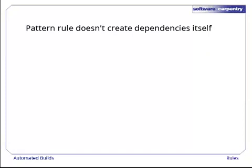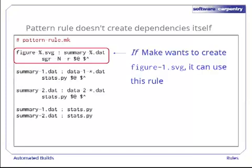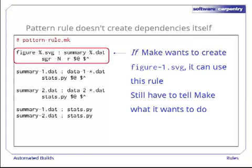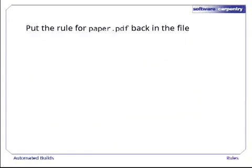The reason is that pattern rules don't create dependencies. They just tell MAKE what to do if there's a dependency. In other words, if MAKE decides it wants to create figure1.svg, it can use our pattern rule, but we still have to tell MAKE to care about figure1.svg.